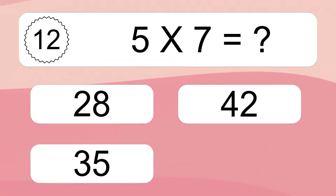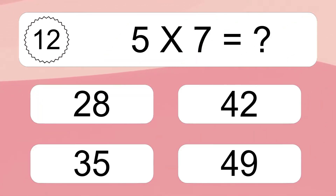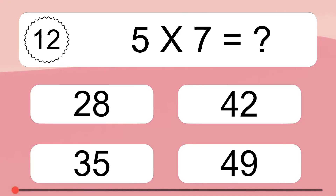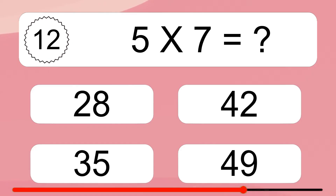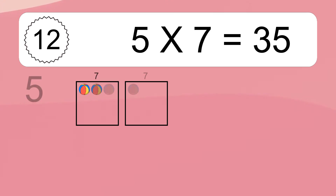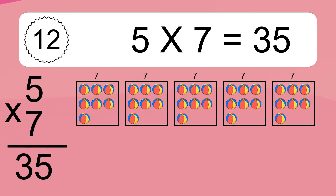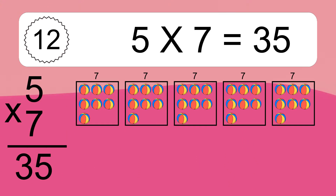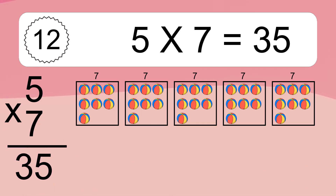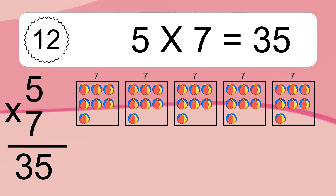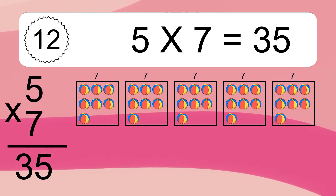Five times seven equals what? Five times seven equals 35. We have five boxes and each box has seven colorful balls inside. If you count all the balls in all the boxes together, you will have five times seven balls. This equals 35 balls.